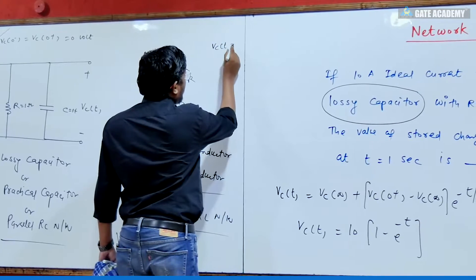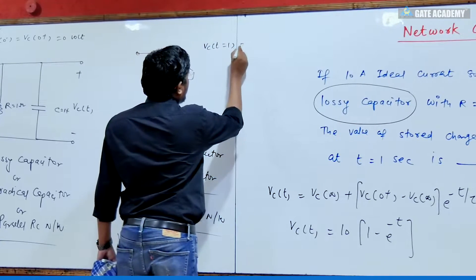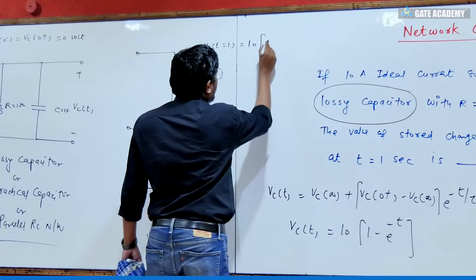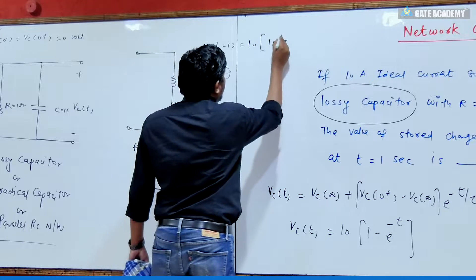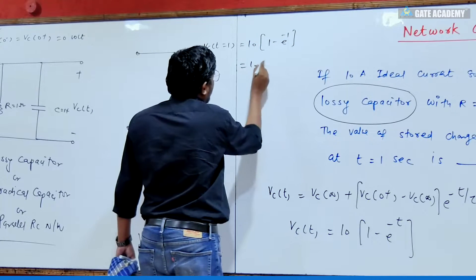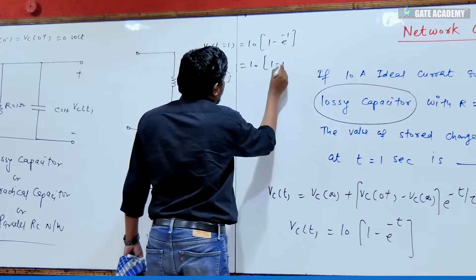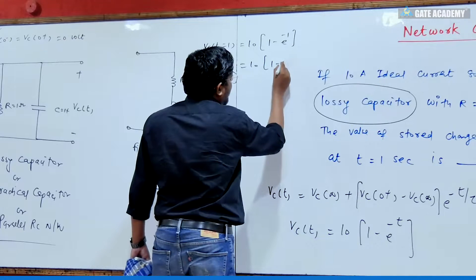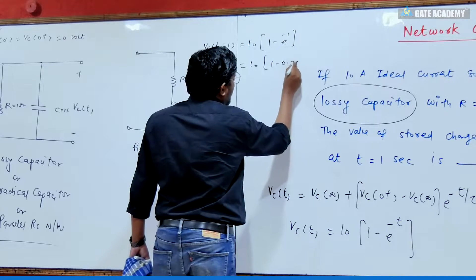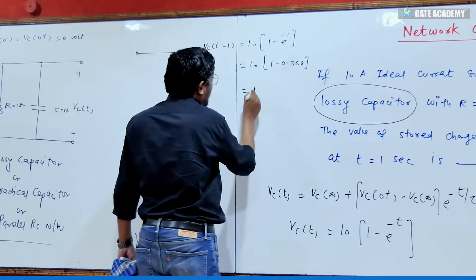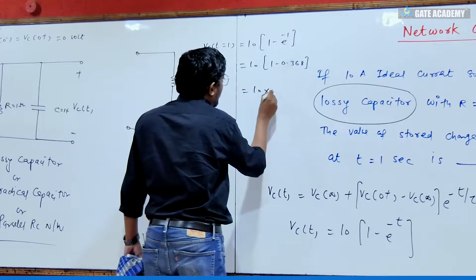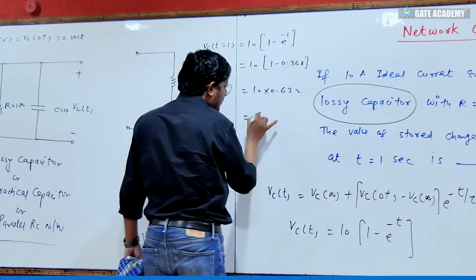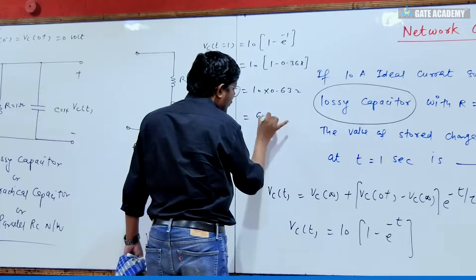How much will the capacitor voltage be at t = 1 second? Substituting: Vc(1) = 10 × (1 − e^(−1)) = 10 × (1 − 0.368) = 10 × 0.632 = 6.32 Volts.